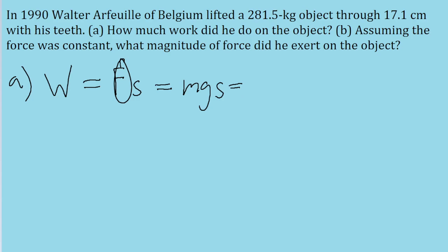So now let's plug in the values that were given to us in the problem. The mass is 281.5 kilograms multiplied by the gravitational acceleration 9.8 meters per second squared. And then we're multiplying the displacement that it was moved through, which is given to us in the problem as 17.1 centimeters.